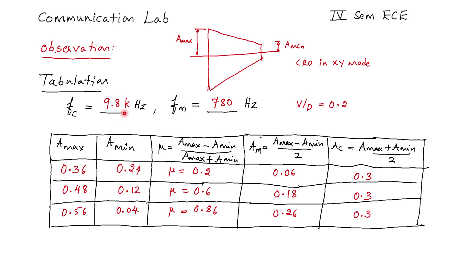The carrier frequency was kept at 9.8 kilohertz and the message signal frequency was selected as 780 hertz. If we put the CRO in XY mode by applying the carrier and input to the two channels, we are able to observe A maximum and A minimum in a trapezoidal fashion. For different cases of message signal amplitude, the values are tabulated and the modulation index is calculated. We obtained 20% modulation for the first case, 60% modulation for the second case, and 86% modulation for the third case.